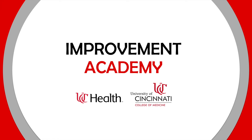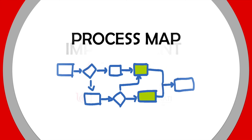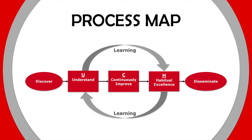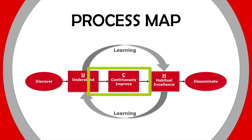Welcome to UC Improvement Academy. Today let's learn about process map, a simple and powerful tool to unlock many improvement opportunities. Building a process map is essential during the understand phase and its utility evolves as we move towards the continuous improvement and habitual excellence phases.